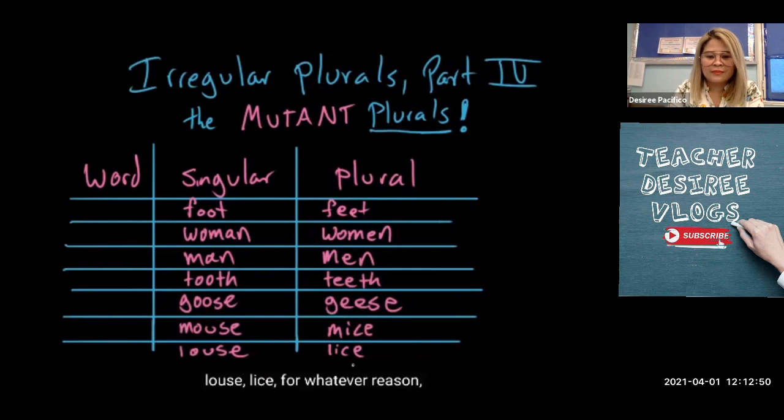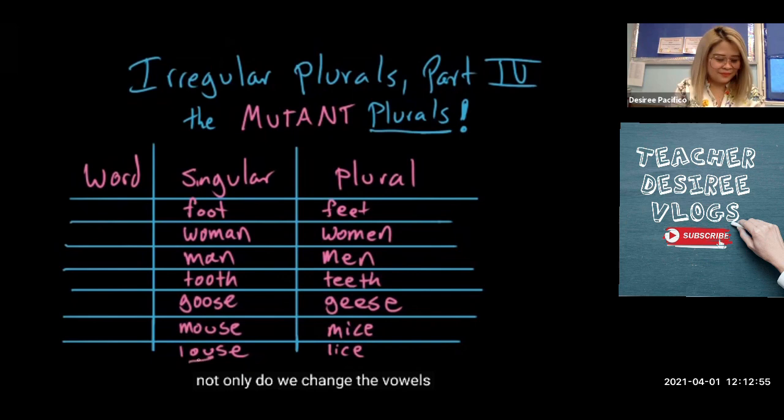For whatever reason, just from some quirk of our spelling history, not only do we change the vowels used here — we also change the consonants. Why is this the case? I'm going to save that for another video. In the meantime, just these seven words.